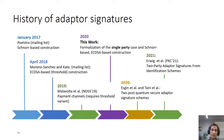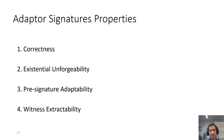Now let's see the security properties that adapter signatures need to satisfy. In short, there are four properties: correctness, existential unforgeability, pre-signature adaptability, and witness extractability. Let's start with correctness.